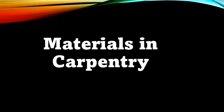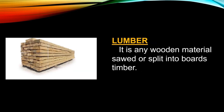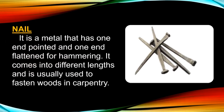Materials in carpentry. First is lumber — it is any wooden material sold or split into boards or timber. It is the most common carpentry material in the carpentry industry. Next is the nail — it is a metal that has one pointed end and one flattened end for hammering. Nails are used to fasten woods in the carpentry industry.